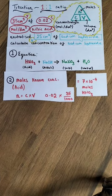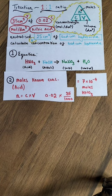At this point, you can calculate the moles of the known concentration, in this case the acid. Moles equals concentration times volume. Ensure you convert your volume into decimates cubed by dividing by a thousand.